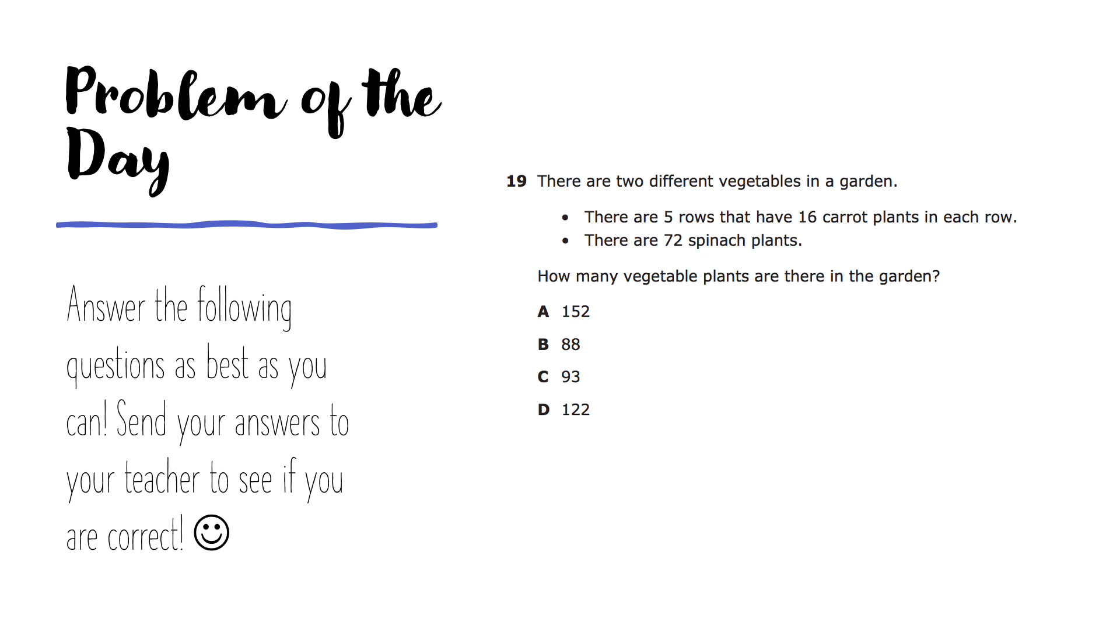There are two different vegetables in a garden. There are five rows that have 16 carrot plants in each row. There are 72 spinach plants. How many vegetable plants are there in the garden? A, 152. B, 88. C, 93. D, 122.